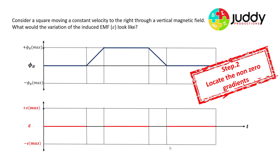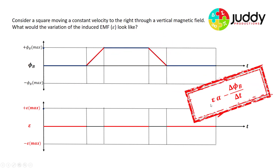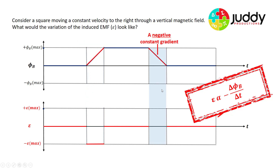Now consider those regions with a non-zero gradient. The first has a constant positive gradient and the second has a constant negative gradient. Since the EMF is proportional to the negative of the gradient, a constant positive gradient induces a constant negative EMF. A constant negative gradient of the flux-time graph generates a constant positive EMF — taking the negative of a negative gradient yields a positive constant EMF.